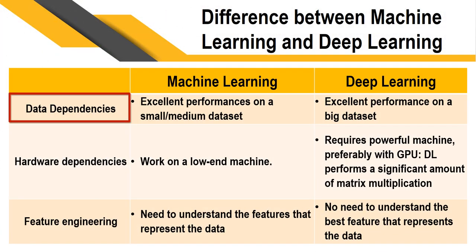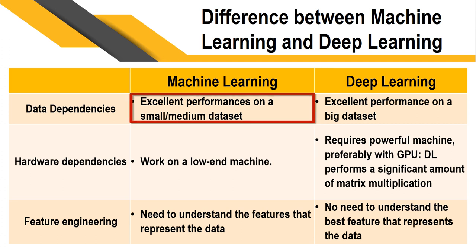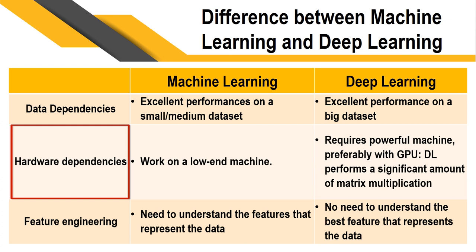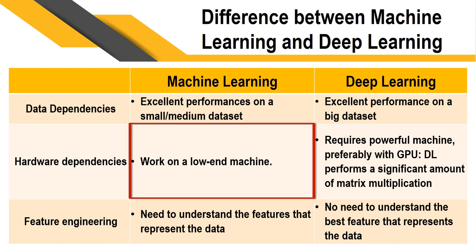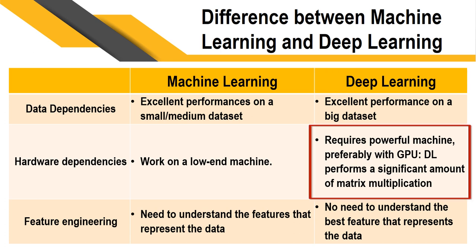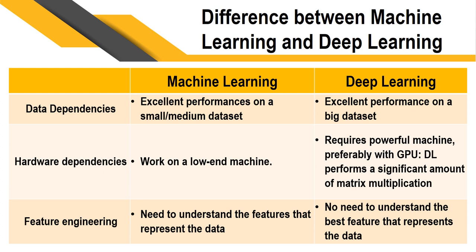Regarding data dependencies: machine learning gives excellent performance on small or medium datasets, while deep learning gives excellent performance on big datasets. So if you have only a small amount of data, use machine learning; if you have big data, use deep learning. For hardware: machine learning works on a low-end machine with a simple CPU, whereas deep learning requires powerful machines with GPUs.